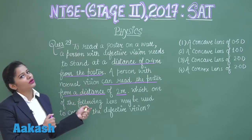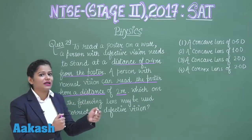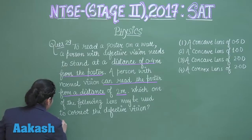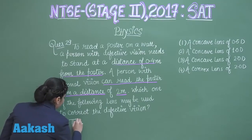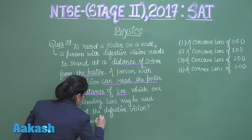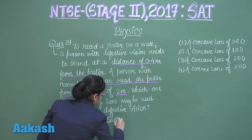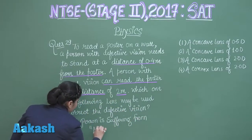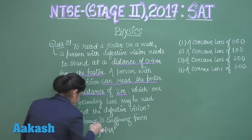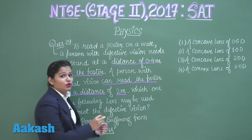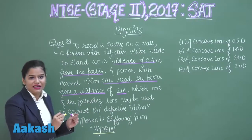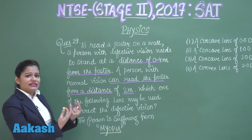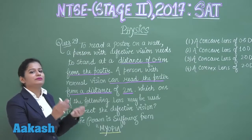A normal person can read the poster from 2 meters, but the defective person had to go close to it — so what defect does he have? He is suffering from myopia. He is suffering from myopia because the poster is not clearly visible to him from a distance, and he has to go near the poster to see it. The poster is not visible to him from 2 meters, where a normal vision person can see it.